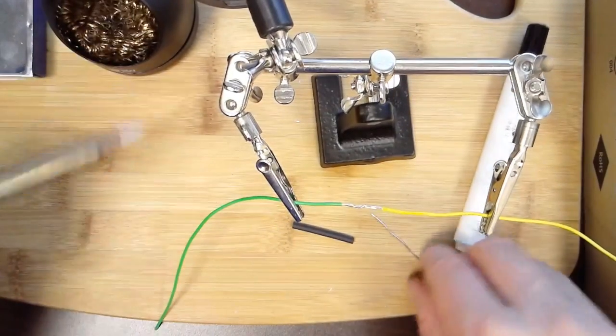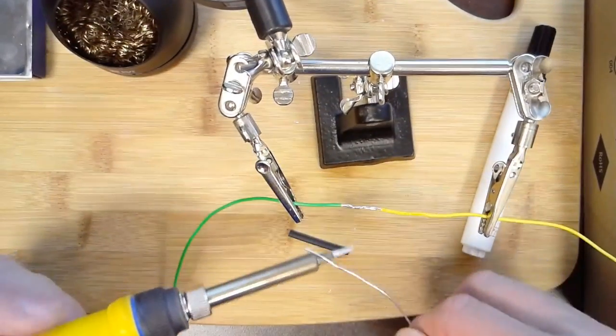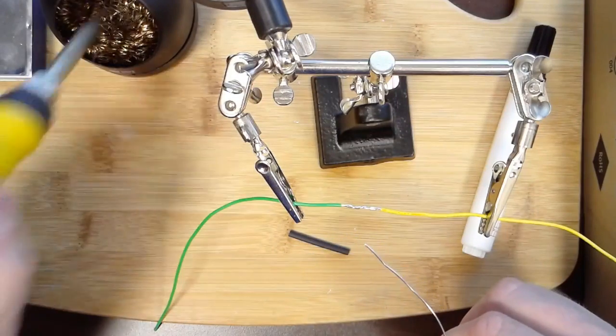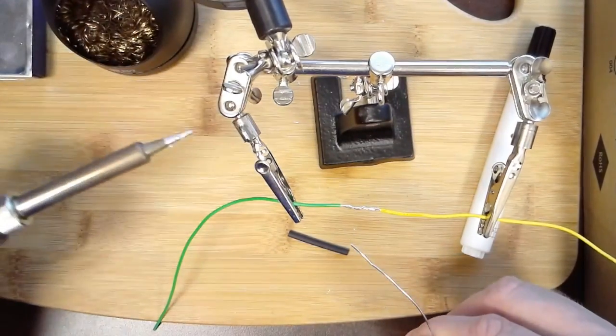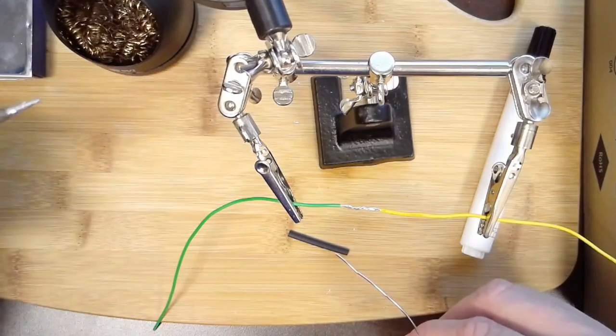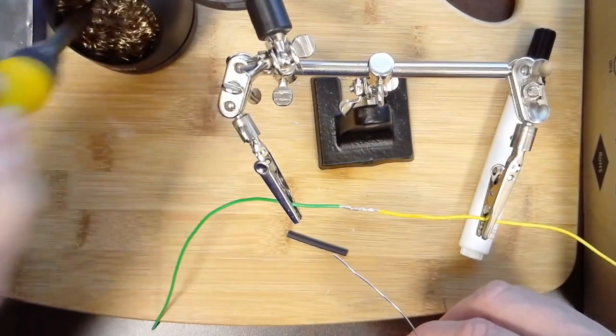I make sure my tip is clean. If I need to clean my tip, I put a little solder on it and douse it in my wire brush, just to keep the tip nice and clean so it's ready to do some good soldering.